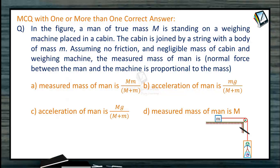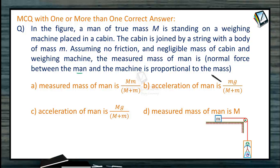MCQ with one or more than one correct answer. In the figure, a man of true mass capital M is standing on a weighing machine placed in a cabin. The cabin is joined by a string with a body of mass smaller m. Assuming no friction and negligible mass of the cabin and the weighing machine, the measured mass of the man — the normal force between the man and the machine — is proportional to mass.